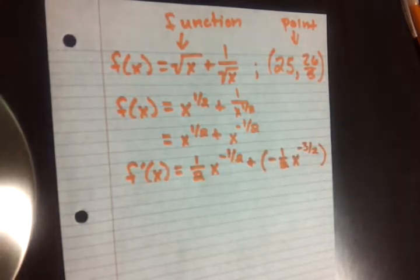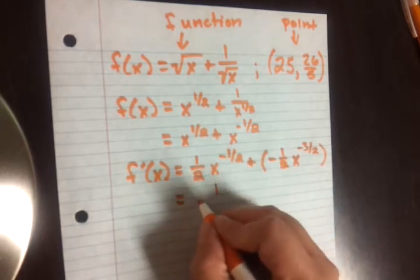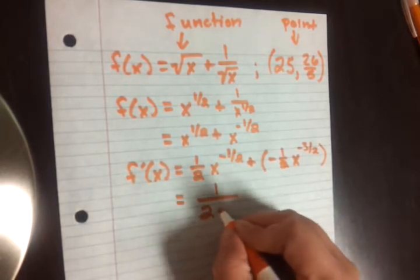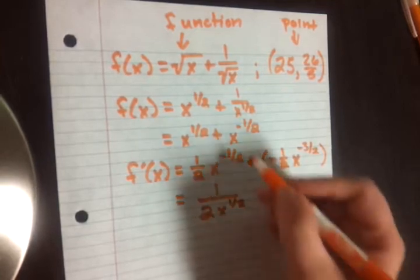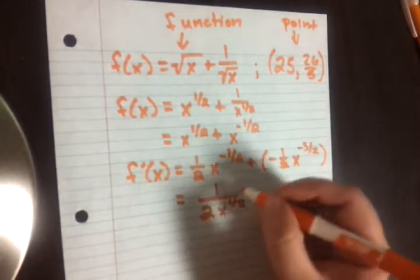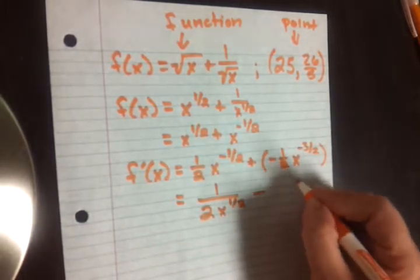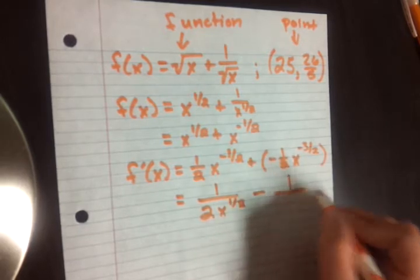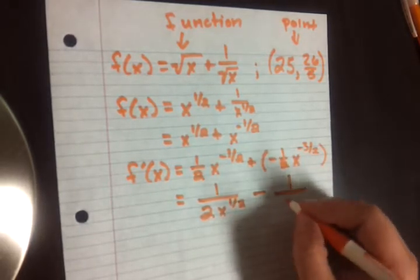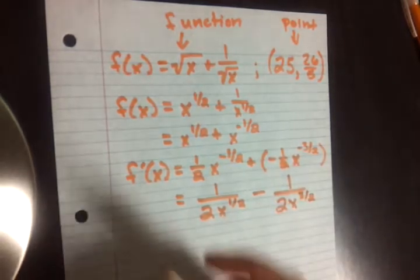So now we've got our derivative. I think we could probably write this out a little bit neater in a way that's going to be more useful for us. So let's condense this down a bit. This gives me 1 over 2x^(1/2). I just brought the x down and changed the signs on the exponent. And then this will be minus 1 over 2x^(3/2). So I think we've got a derivative. I think this is something we can work with.